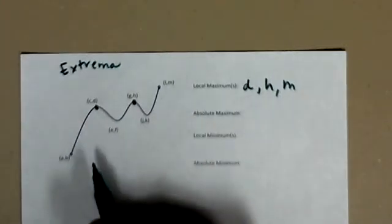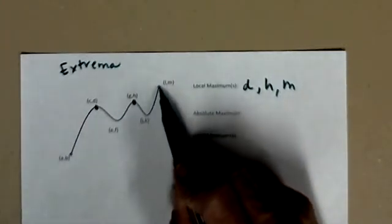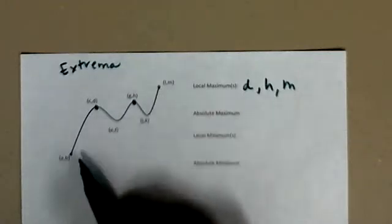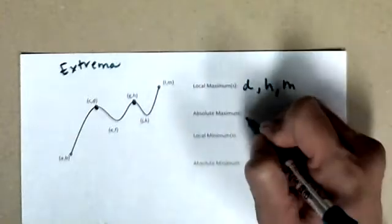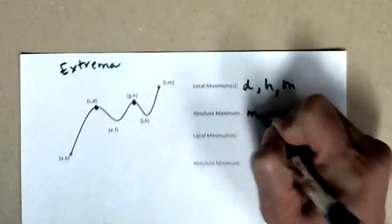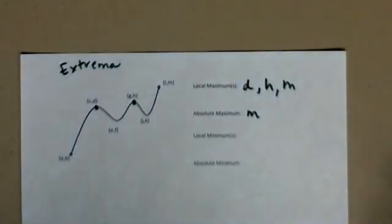So we have an ending point, and this ending point is above all of the other points on our graph. So m is the absolute maximum value that that function takes on.